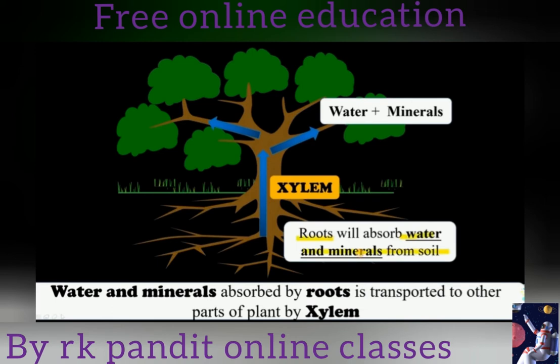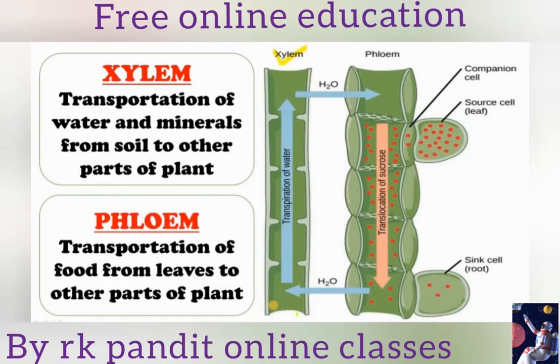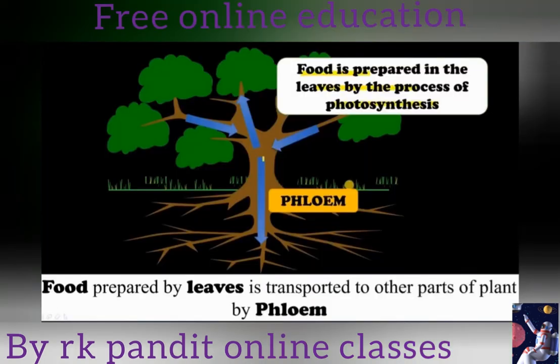Water and minerals absorbed by roots are transported to other parts of the plant by the xylem. Xylem transports water and minerals from the soil to other parts of the plant. Phloem transfers water and waste material from the plant to different parts and to the outside.